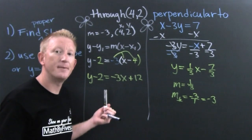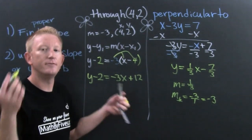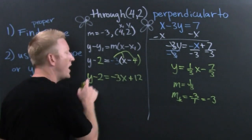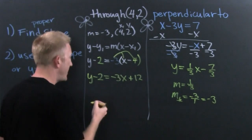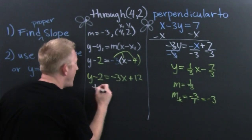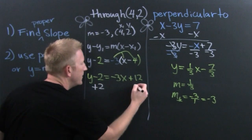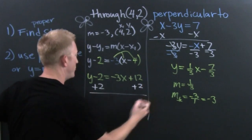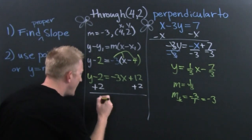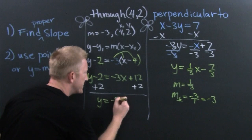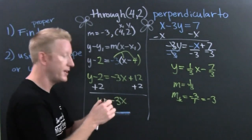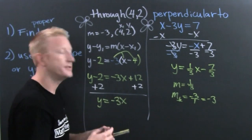Now I have y minus 2 equals negative 3x plus 12. I'm going to put it into y equals mx plus b because that's cheap and easy to graph and people are used to seeing it. I add the 2 to both sides, so y equals negative 3x plus 14.